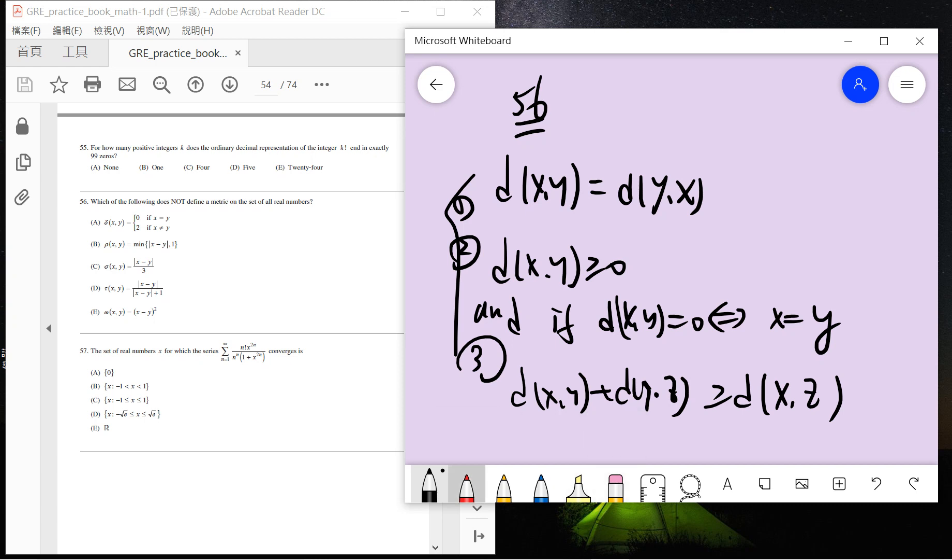Okay, so the first one A. So A is the standard delta matrix. So basically you can see the three properties also hold. So the A choice is very easy.